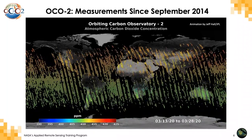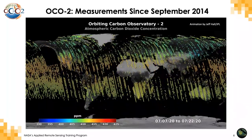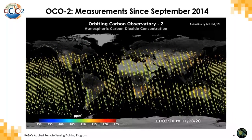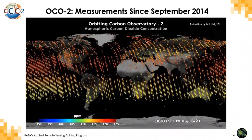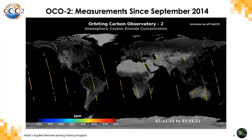With the satellite record, you can start to pick out some spatial features. In the summertime, going into Northern Hemisphere summer, you can see a decrease in carbon dioxide in the Northern Hemisphere as the growing season starts and uptake from plants begins, and then an increase again in the winter. In these satellite maps, we also see some enhancements associated with areas of strong anthropogenic emissions or a lot of burning of fossil fuels, and then transport of that CO2 from those areas of strong emissions. That's the record from OCO-2.